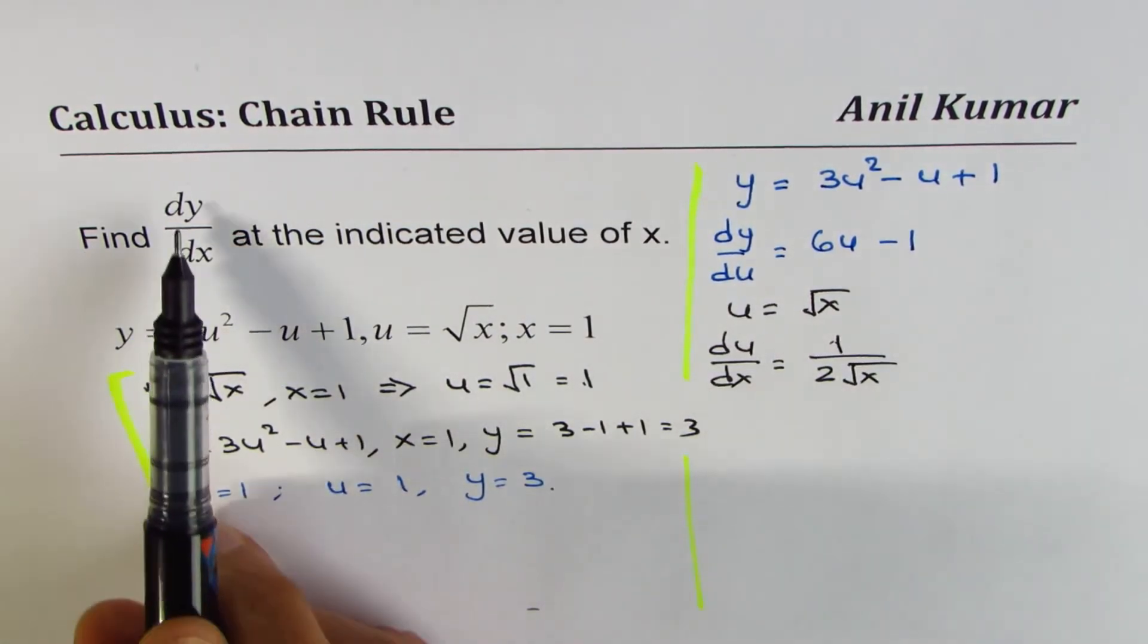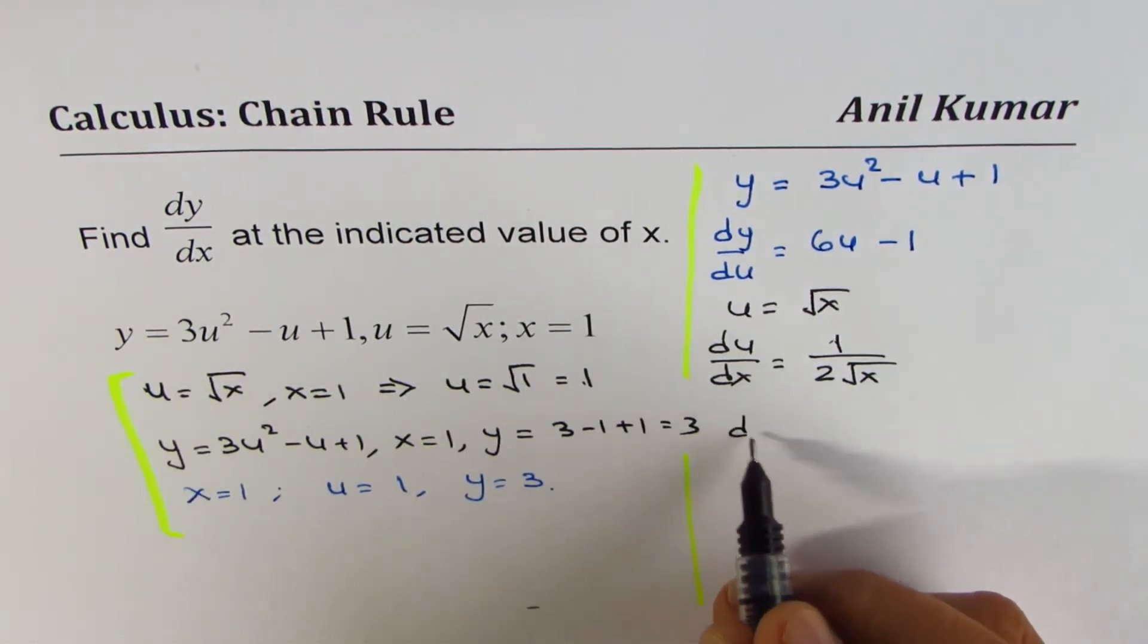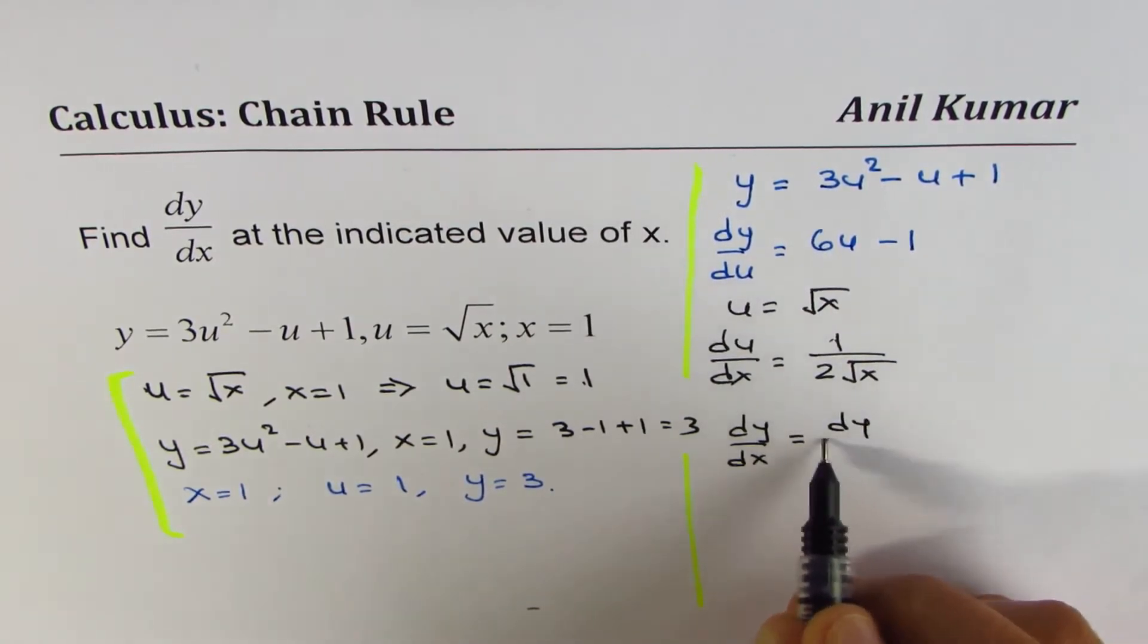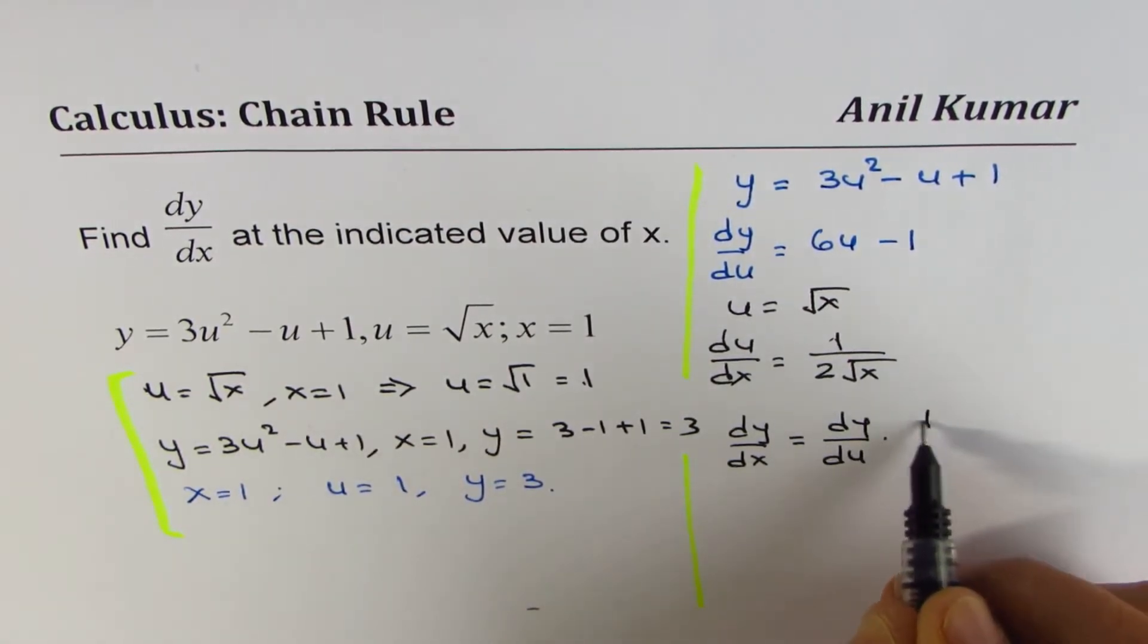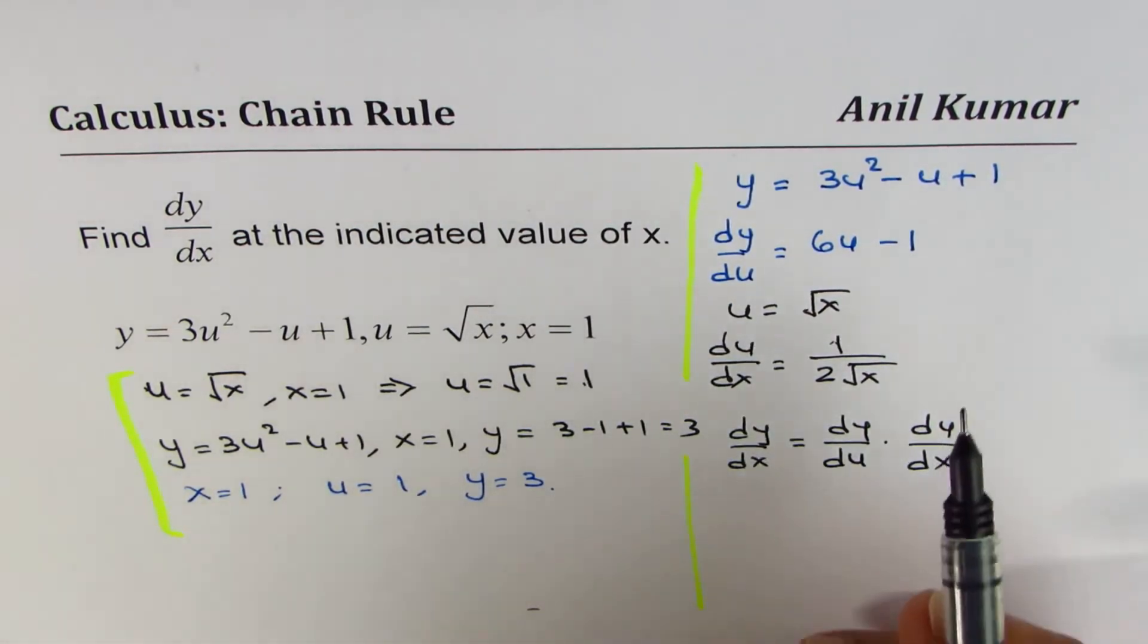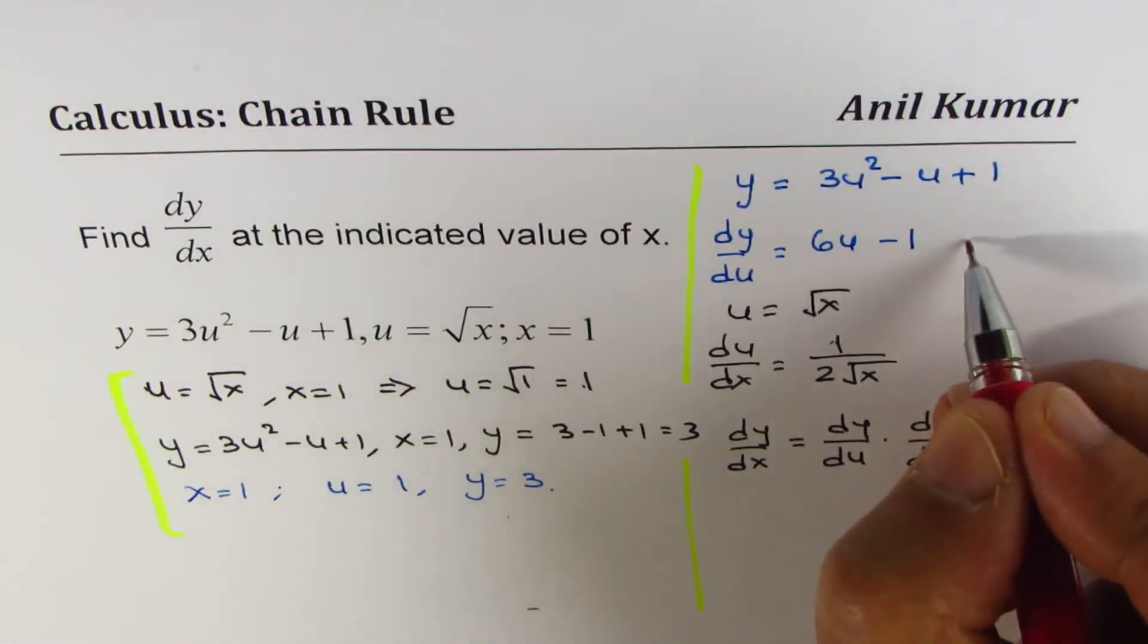What we need to find is dy/dx. Applying the chain rule, we can say that dy/dx equals dy/du times du/dx. Now, dy/du has been calculated as 6u minus 1.